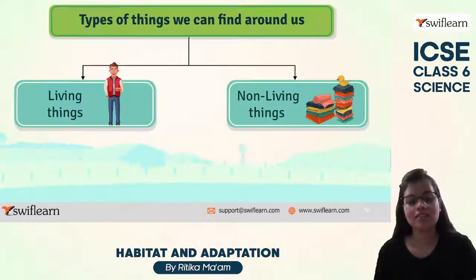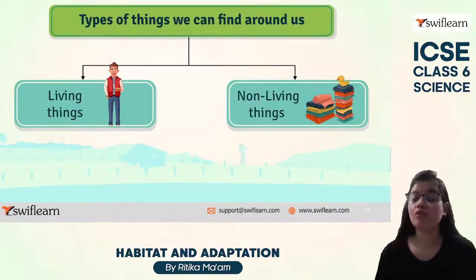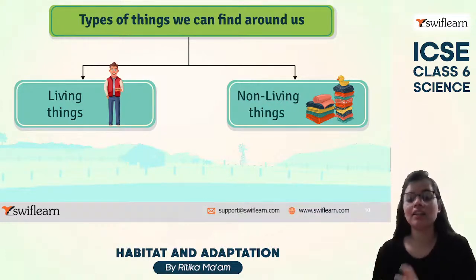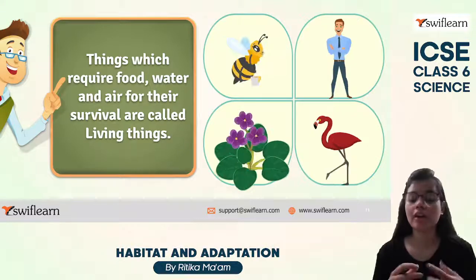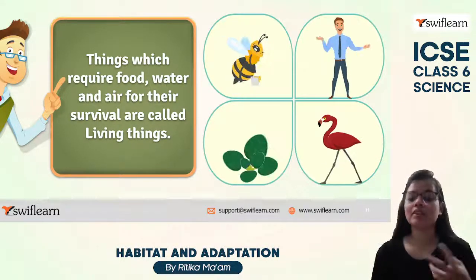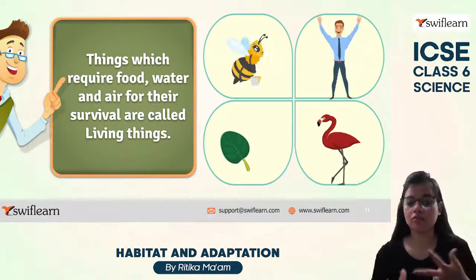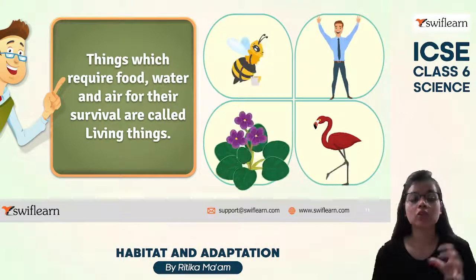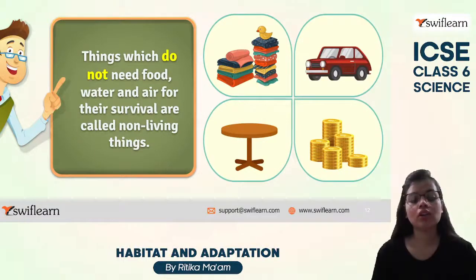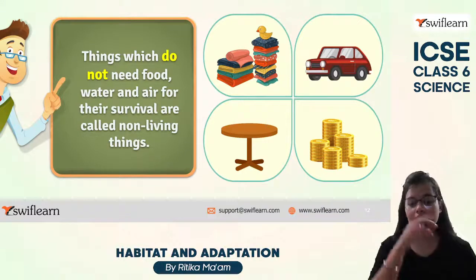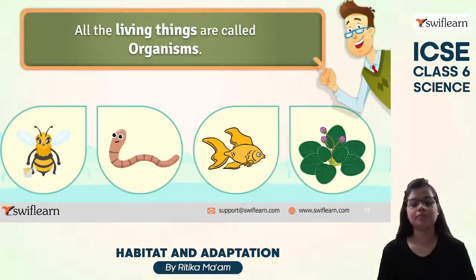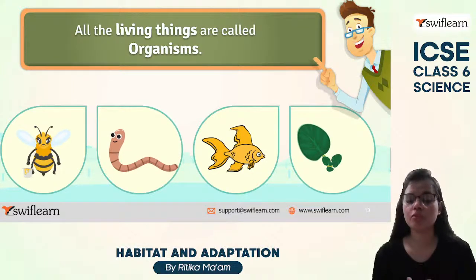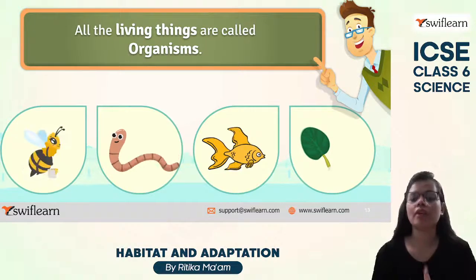There are two types of things we can find around us: living things and non-living things. Living things include animals, birds, and plants — things which require food, water, and air for survival. We as human beings are living things because we need food, water, and air to survive. Non-living things do not need food, water, or air — examples include a bottle, a pen, a laptop, a door, windows, and houses.